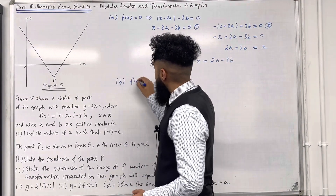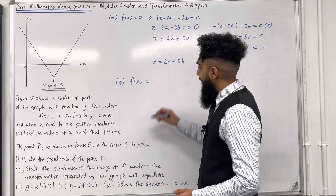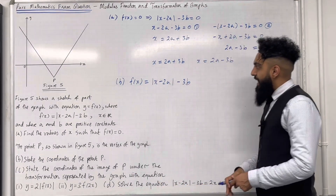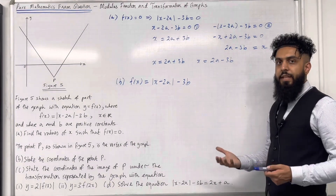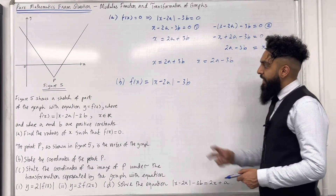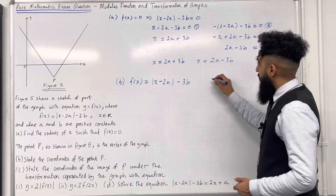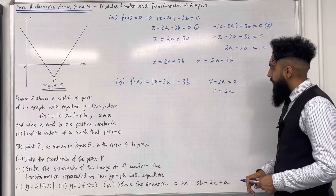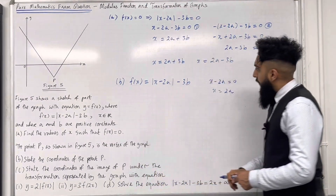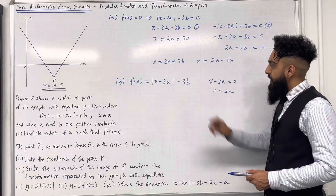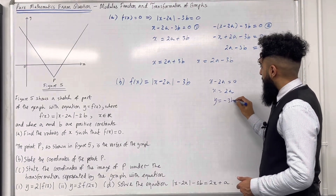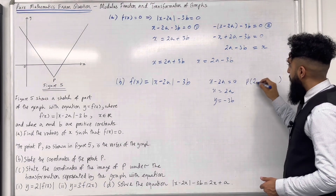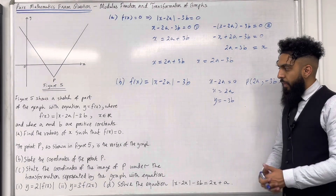For part B, f(x) has equation |x − 2a| − 3b. Treating this like a quadratic in completed-square form, to find the vertex we set x − 2a = 0, which gives x = 2a as the x-coordinate of P. The y-coordinate is the outer term, so y = −3b. The coordinates of P are therefore (2a, −3b).